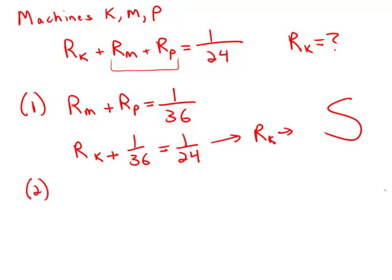Forgetting statement 1, we move on to statement 2. We're told that when K and P work together, the task is completed in 48 minutes. So adding the rate of K plus the rate of P, we get 1/48.